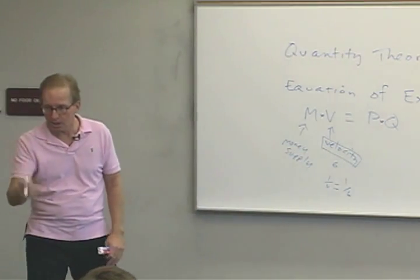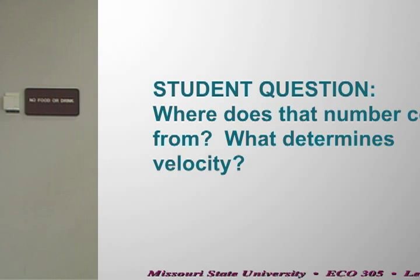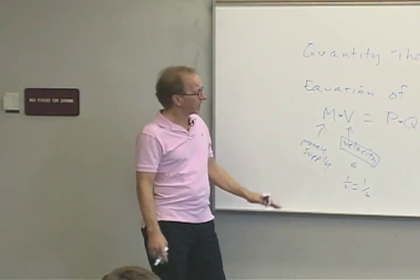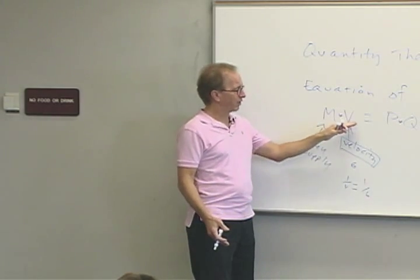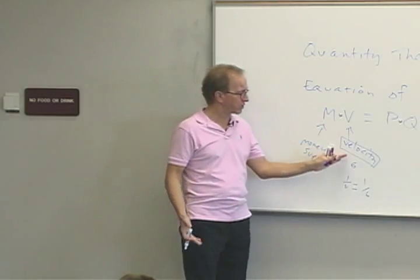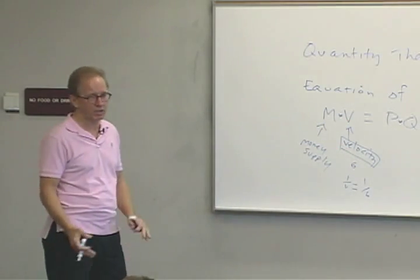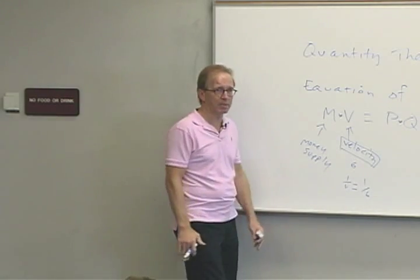You can calculate velocity by dividing P times Q by M. In more sophisticated theoretical discussions, velocity is an indicator of money demand and is influenced by things like interest rates, the state of technology, and our expectations about what's going to happen in the economy.